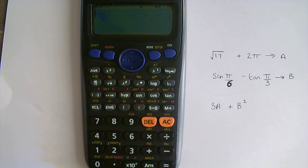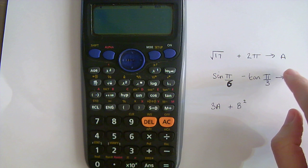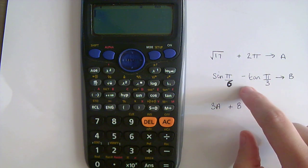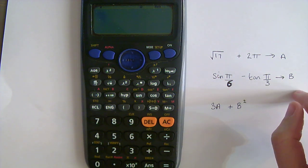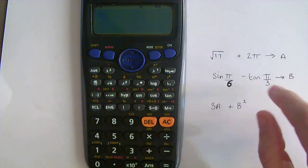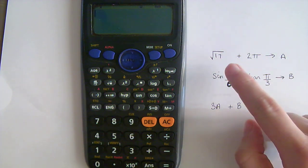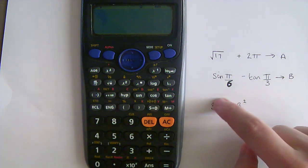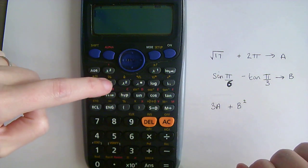So I want to go ahead and save root 17 plus 2π into memory A, and also sine of π over 6 minus tan of π over 3 into memory B. I've just made these up, this isn't a real question, it's just to illustrate that I'm going to save this number into A, this number into B, so that I can then work out this sum really easily. So on my calculator I'm going to type in